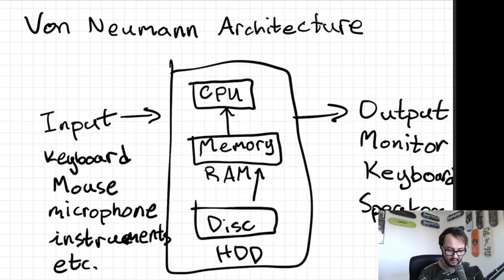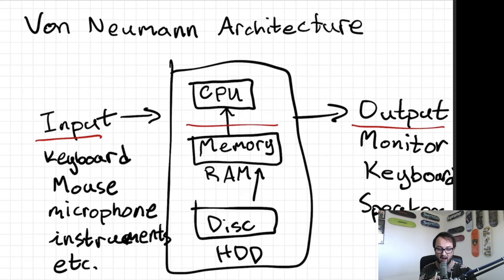As computer scientists, what we're worried about is we want to take input, we want to process that input on our CPU. So we want to process the input there, and then once we've processed that input, we want to output that processed input. And how do we do that? We do it with programs.